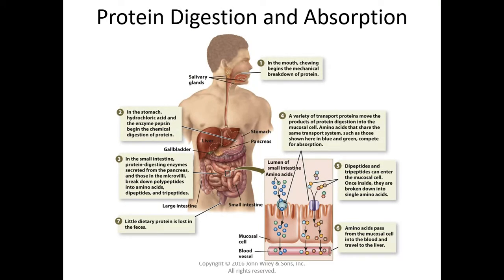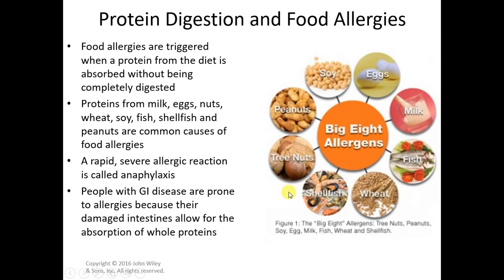Our bodies need amino acids as the end product of digestion. Digestion of proteins begins in the stomach — the chemical digestion — because acid is present as well as an enzyme that begins the breakdown of protein. Protein digestion is completed in the small intestine. When protein digestion is incomplete and a whole protein passes through the digestive tract, food allergies can be triggered.